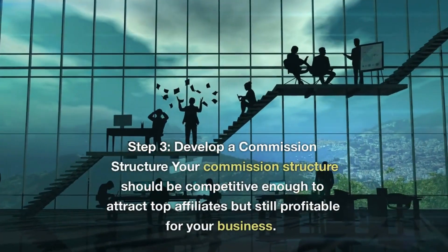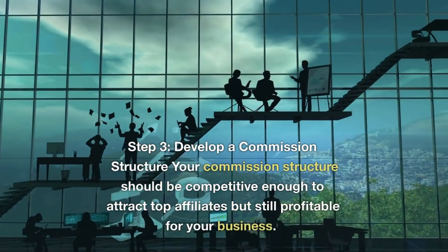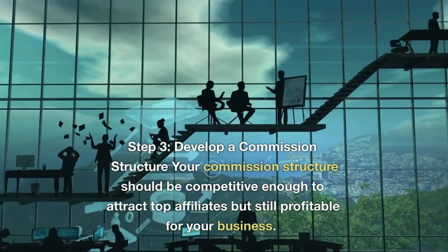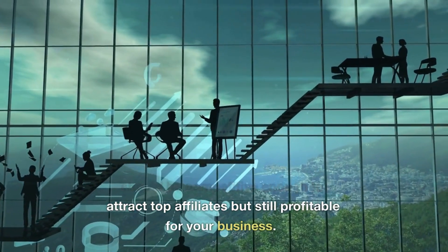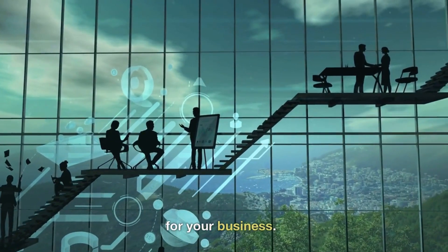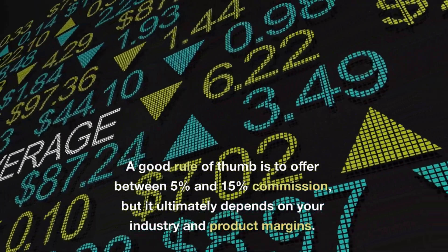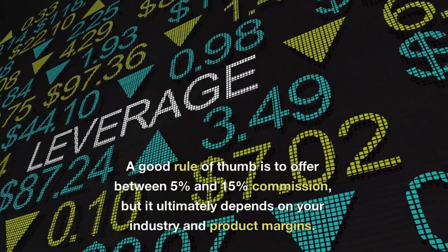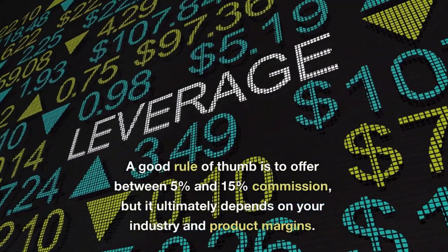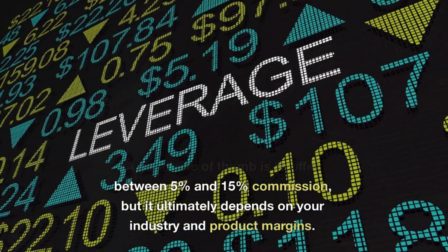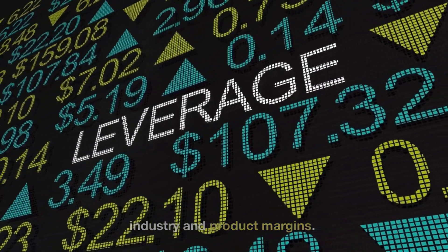Step 3: Develop a commission structure. Your commission structure should be competitive enough to attract top affiliates but still profitable for your business. A good rule of thumb is to offer between 5% and 15% commission, but it ultimately depends on your industry and product margins.